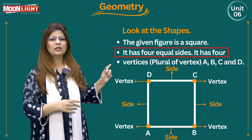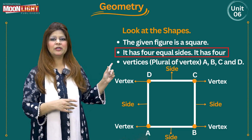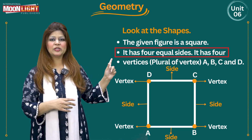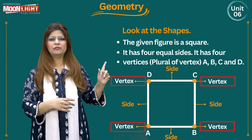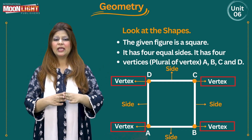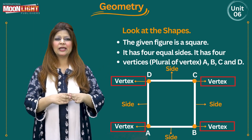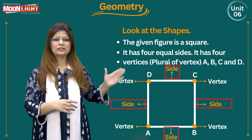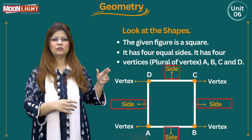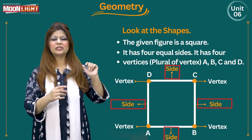Vertices means corners. So how many vertices? One, two, three, four vertices. And how many sides are here? This is side one, two, three, four sides.